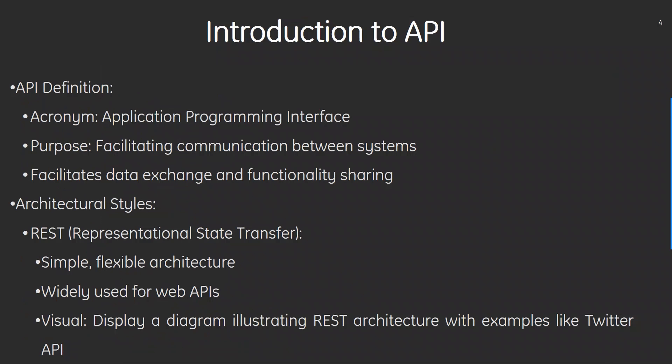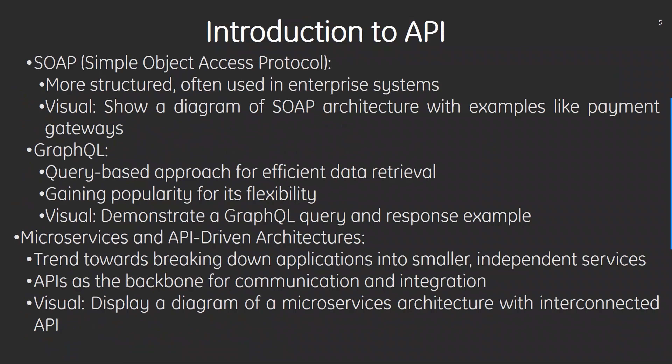For visual, a diagram illustrating REST architecture is shown with an example like the Twitter API. The second architectural style is SOAP, which is Simple Object Access Protocol — more structured and often used in enterprise systems, with examples like payment gateways. Then we have GraphQL, a query-based approach for efficient data retrieval, gaining popularity for its flexibility, with a GraphQL query and response example demonstrated.